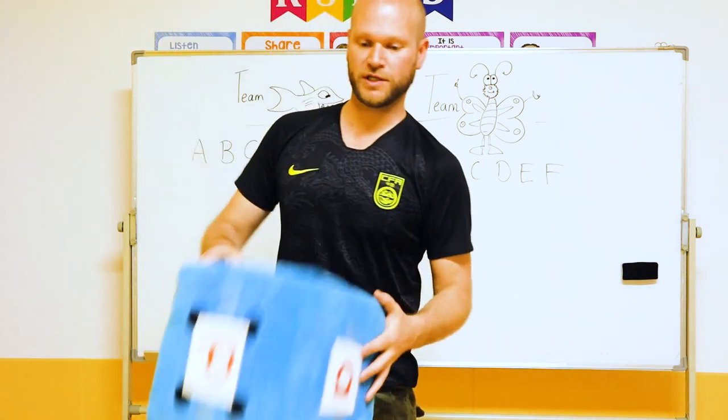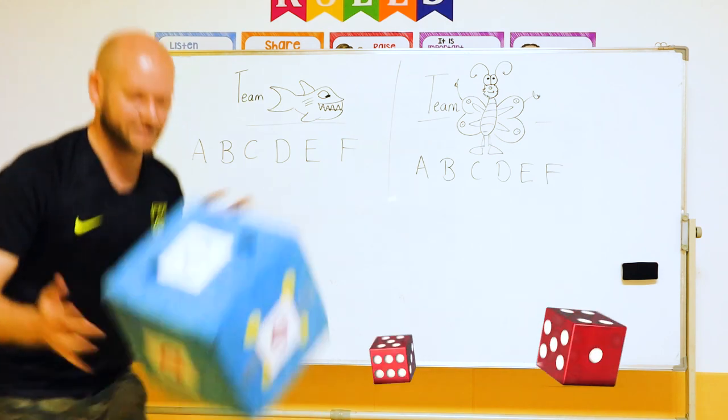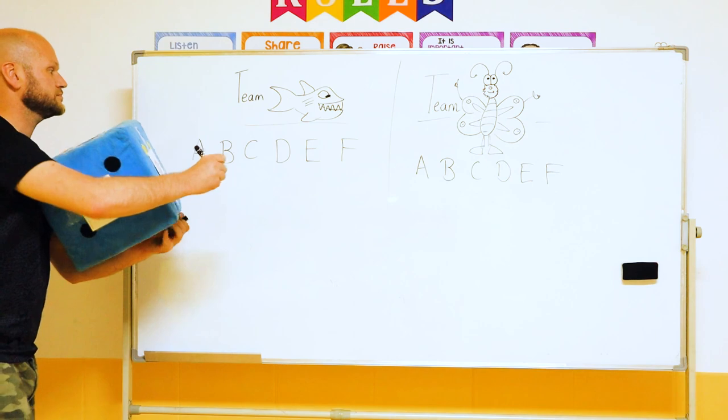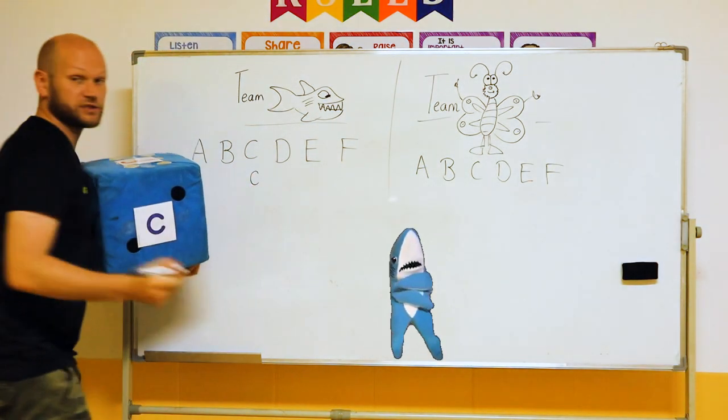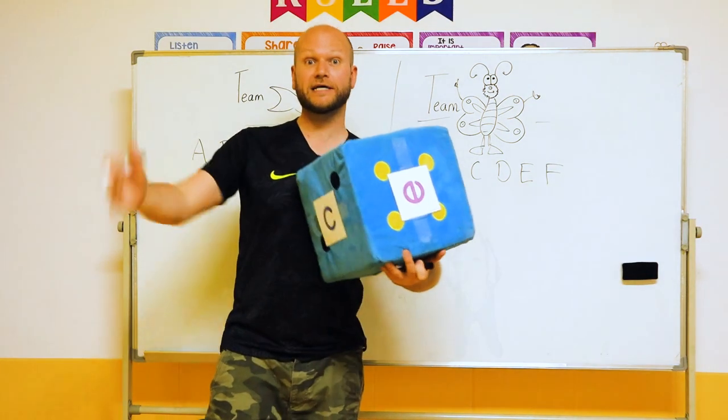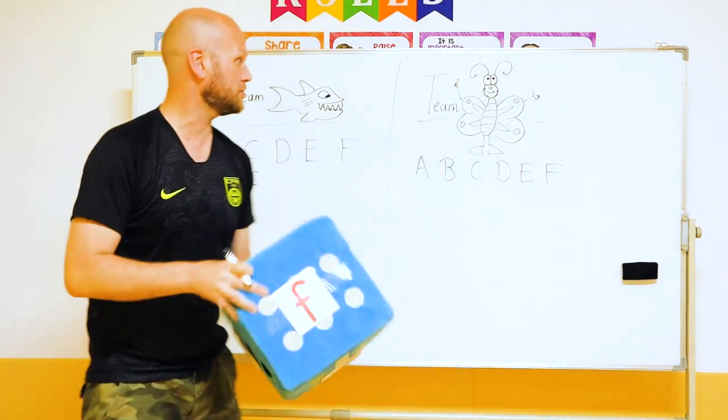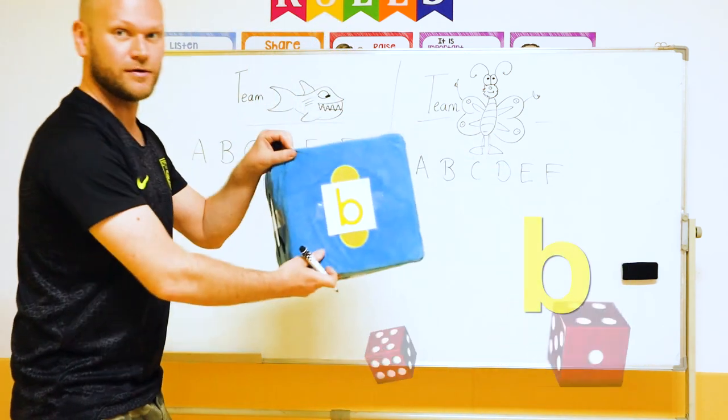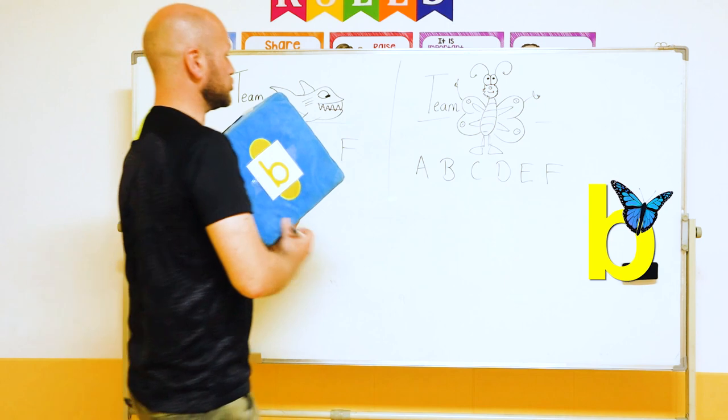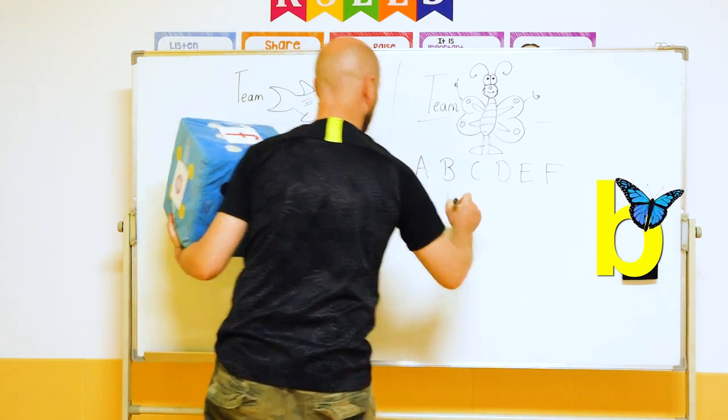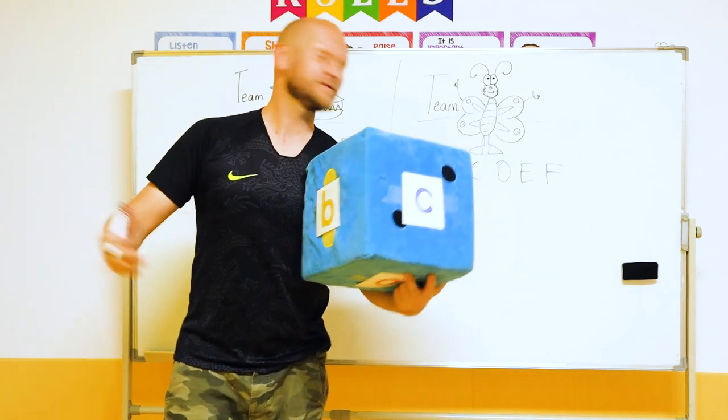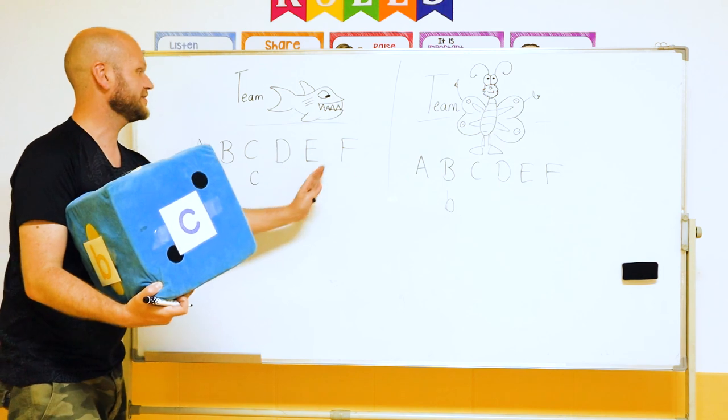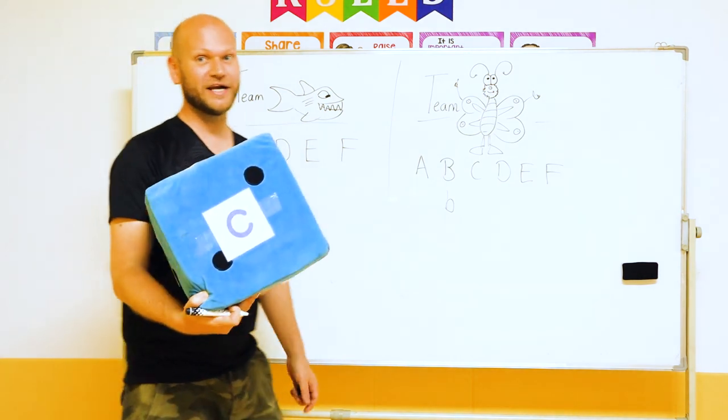So this team can throw the dice. So they throw a C. So all you do is underneath the C, write the small C. So make sure the whole team says letter C. Good job. Team Butterfly Man can throw. Choose one student. Throw the dice. What do we have? Small B. Good job. So small B goes here. So keep playing the game. The first team to have every letter is the winner.